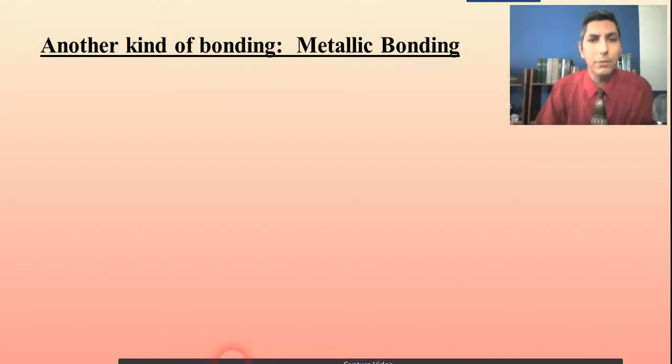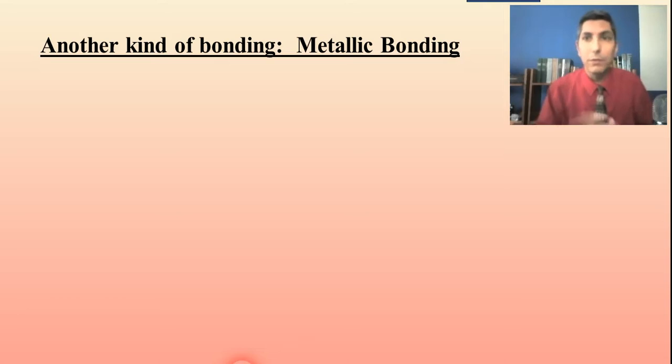Welcome back to AP Chemistry and General Chemistry. My name is Jeremy Krug and in this video we're looking at special types of bonding situations. In the previous video we looked at the difference between covalent bonds and their properties and ionic bonds and their properties. In this video though we are looking at some special cases.